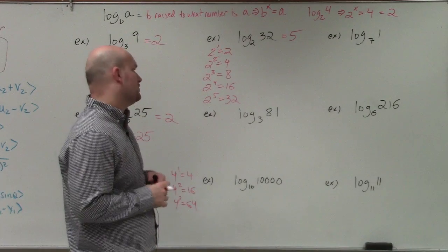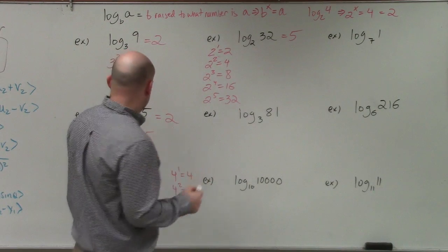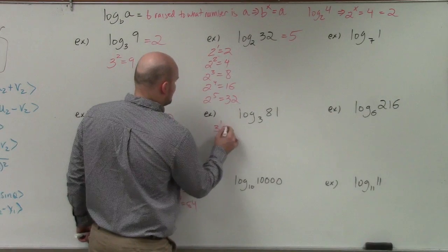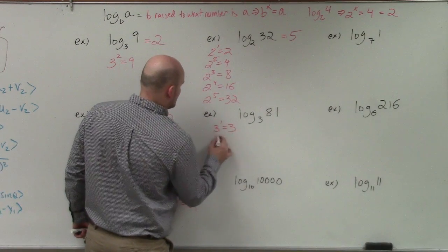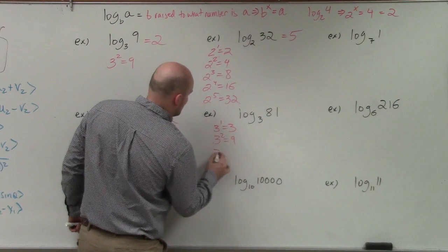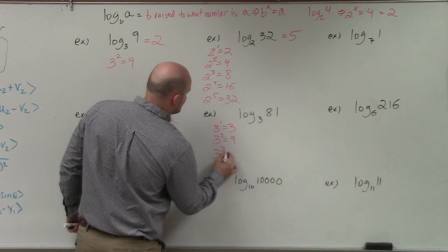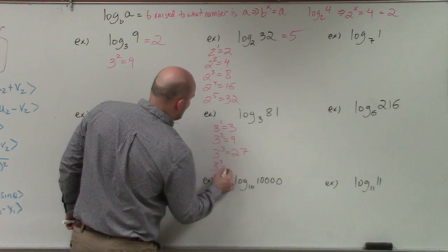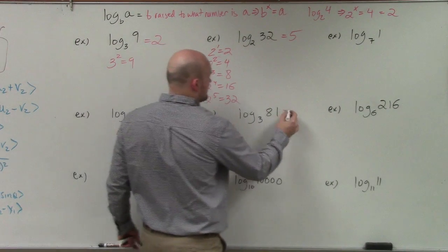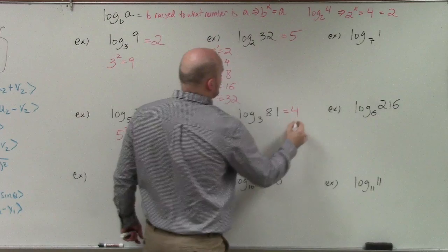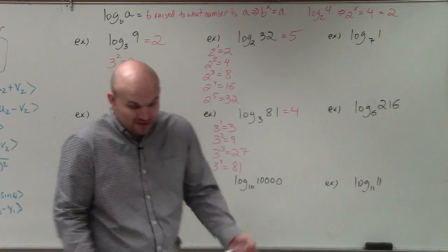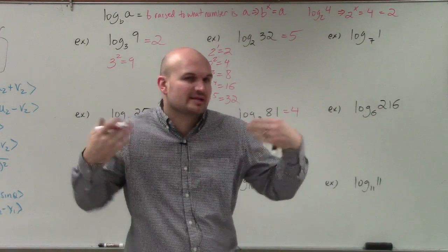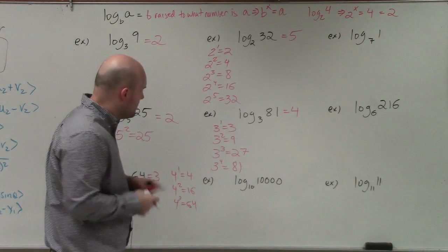Over here I have log base 3 of 81. Let's do: 3 to the first power is 3, 3 squared is 9, 3 cubed is 27, and 3 to the fourth power is 81. You might just have to type in your calculator — 3 cubed, 3 to the fourth — until you really get good at these. The answer is 4.